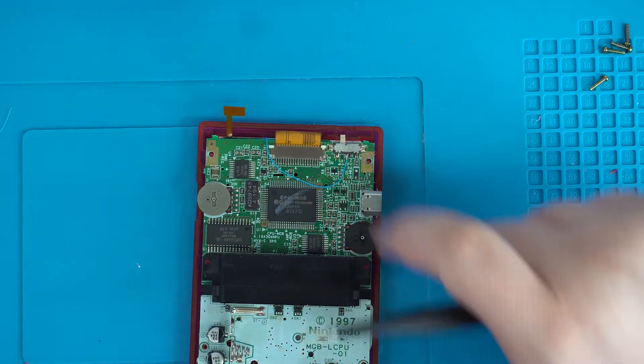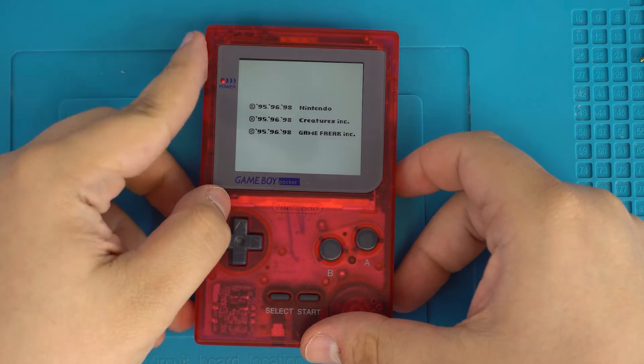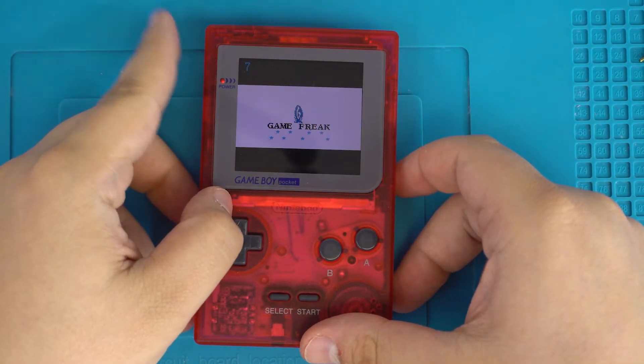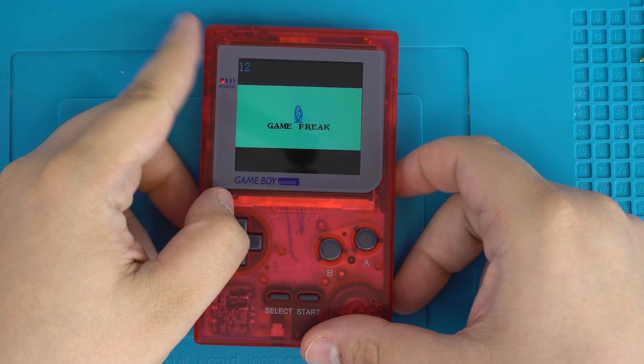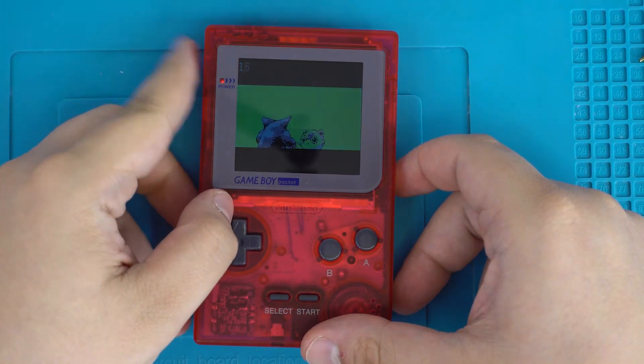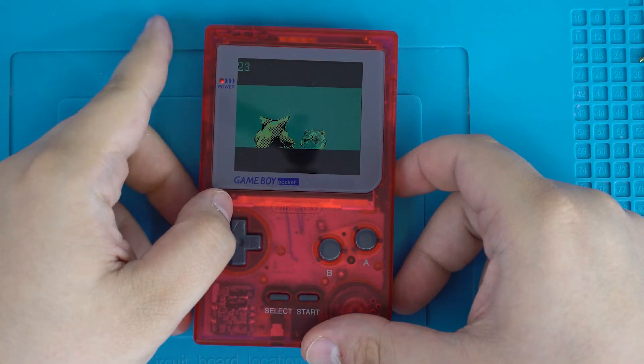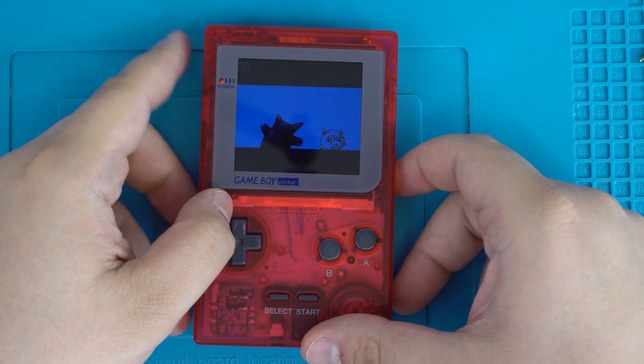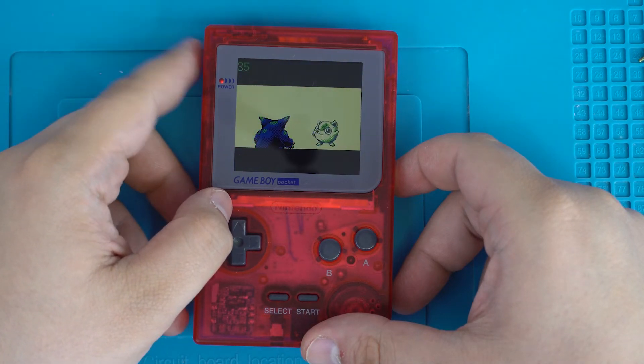Once you've soldered that power wire, you can begin to button up your console. As mentioned before, this kit has a total of 36 different color modes that you can swap through, as well as a pixel grid mode and a battery indicator, all of which are accessible via the on-screen display.